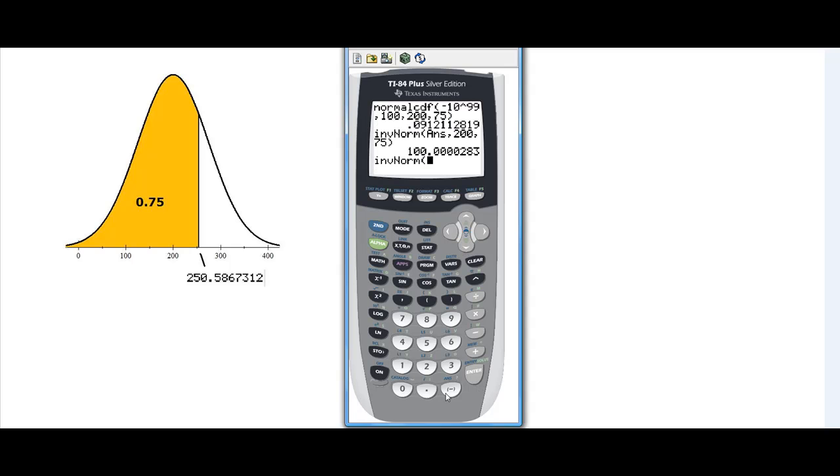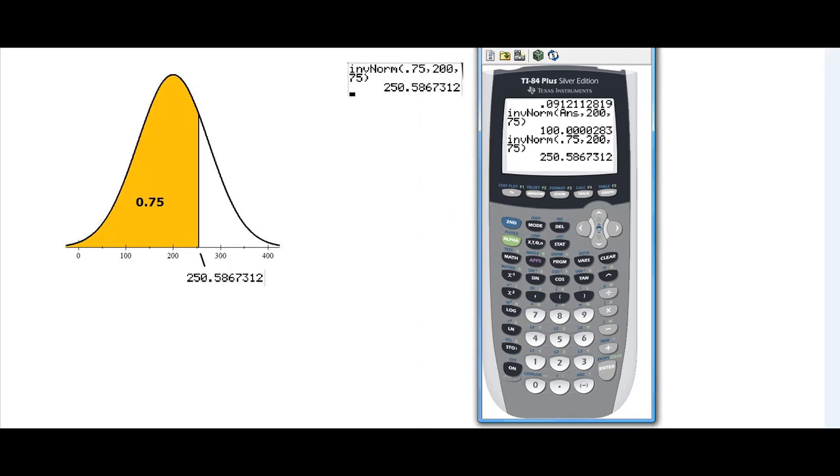Or I could have done second, enter, and gotten the same value. I'm looking for this 75th percentile. And notice this, I'm putting the percentile, the percent value as a proportion, and I'm entering the parameters, and I should get this value that way.